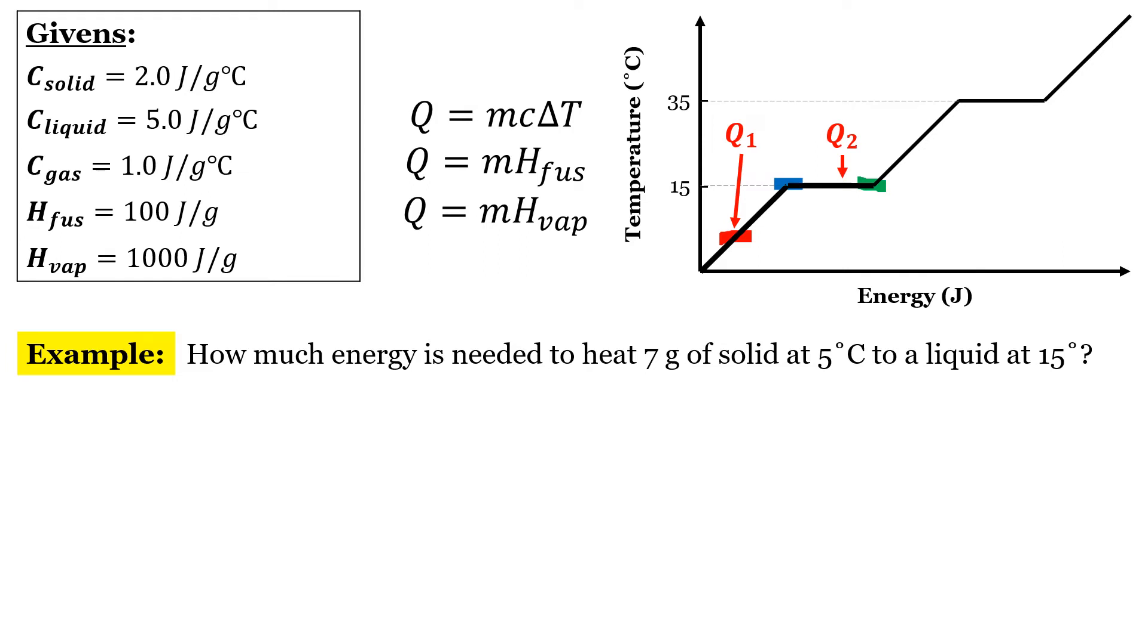So to complete the first part, we're going to use the q equals mc delta t equation. The question tells us that our mass is 7 grams. In our table of givens, the c solid is 2.0 joules over grams times degrees Celsius. And the change in temperature going from 5 to 15 degrees is 10 degrees Celsius. When we multiply those three numbers together, we get a total of 140 joules.